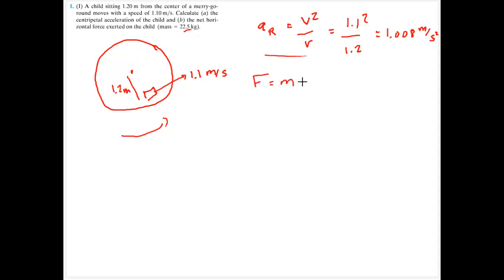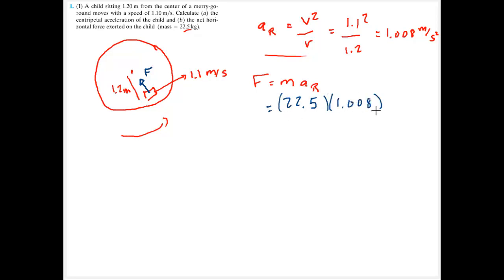The force is equal to the mass times the radial acceleration. The force and the acceleration are in the center-pointing direction, so it's going to be towards the center of the merry-go-round. 22.5 kilograms multiplied by 1.008 meters per second squared gives us 22.7 newtons for the force.